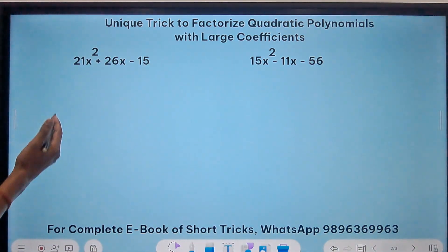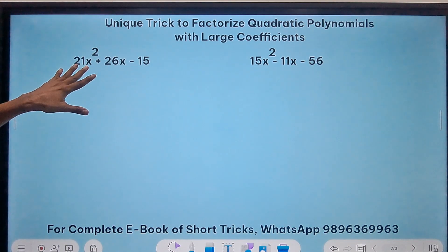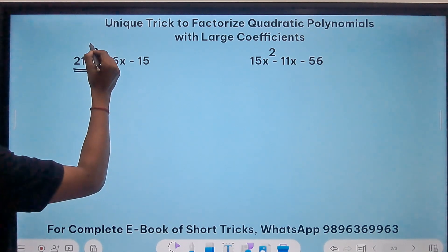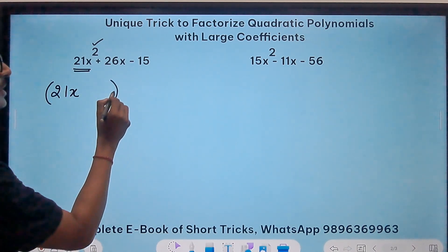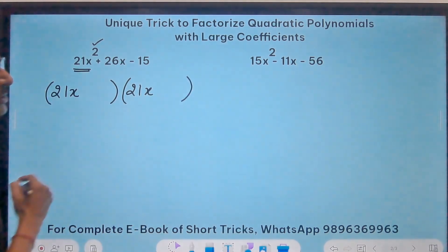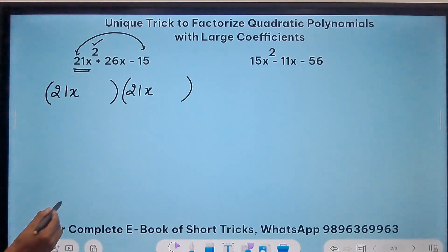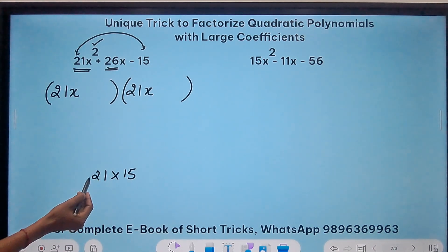Here you can see now the coefficients are all two digit coefficients, whether this quadratic polynomial or this quadratic polynomial is to be taken up. Now 21x, so I have to ignore the square. So I'll put a bracket starting with 21x, close it, and then another bracket starting with the same number 21x and then close it. Now what about the factors? 21 times 15, I'll write here 21 times 15, and I need to get 26. Now 21 and 15 is not going to give me a 26. Even if I add them I get 36, if I subtract them I get 6. So this is not going to work.